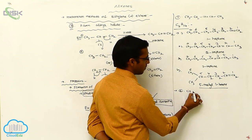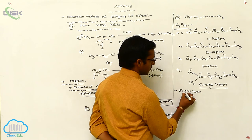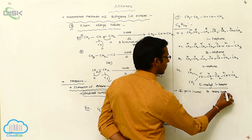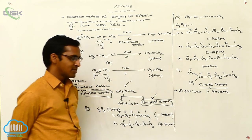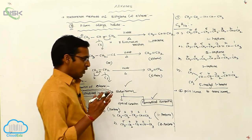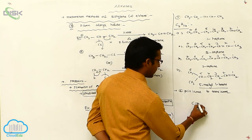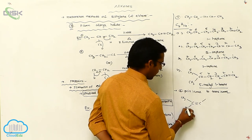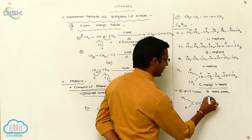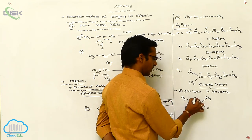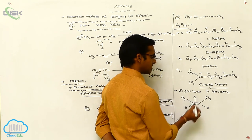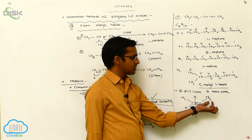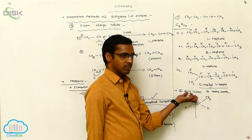The first type is cis isomer and the second is trans isomer. The cis isomer means around the double bond, the connectivity of atoms or groups are identical — that is, on the same side. See here: this group is on the top side, and this group is also on the top side. Both are on the same side. This is the cis isomer. Cis means same side.